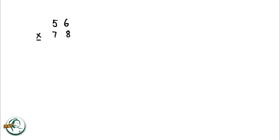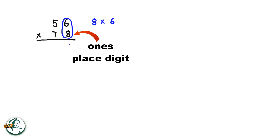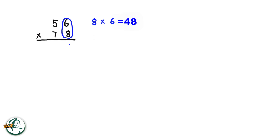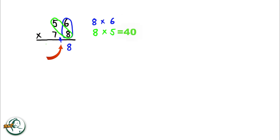Let's do another example: 56 times 78. Firstly, we'll start with the ones place digit, 8. We multiply 8 by 6, giving us 48. We write down the 8 and carry over the 4. Next, we multiply 8 by 5, resulting in 40. Adding the carried over 4 to 40, we get 44.